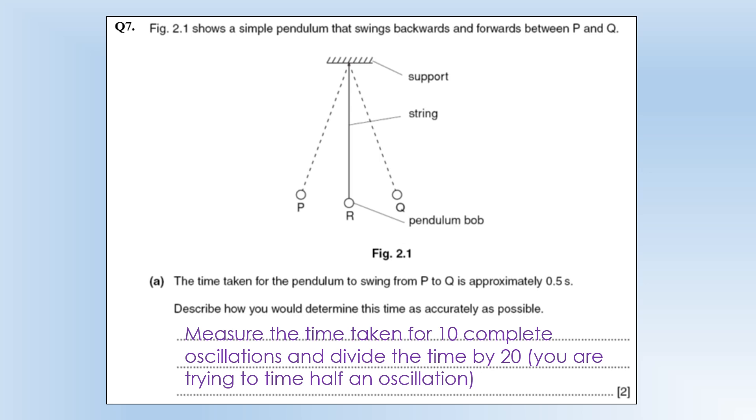And then we want the time for half an oscillation because we want to go from p to q. So we're going to divide that time by 20 and that would give us our time. But it would give us an accurate value of the time.